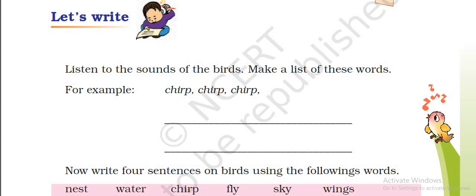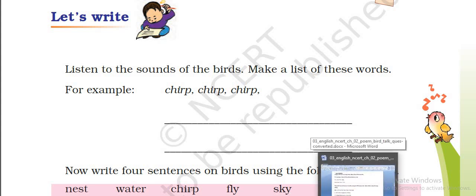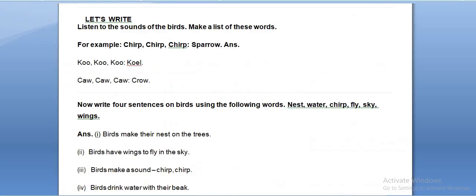Make a list of these words. The birds are making different kinds of sounds that you may have learned in previous class — different birds are making different sounds. One example is given: chirp chirp chirp — this kind of sound is made by the sparrow. Like this, you have to write other different kinds of sounds in the given space. Here, koo koo — that kind of sound.